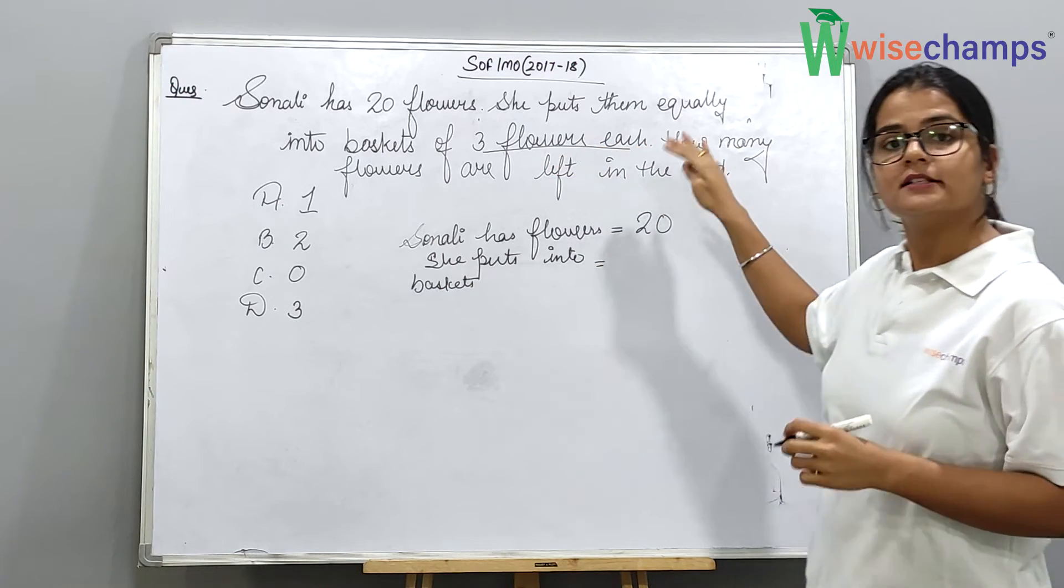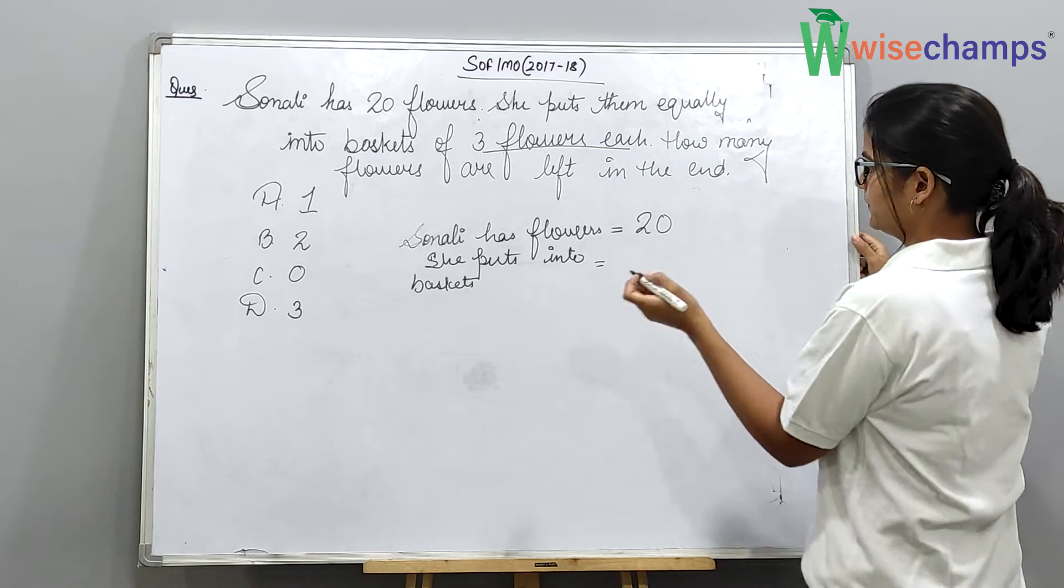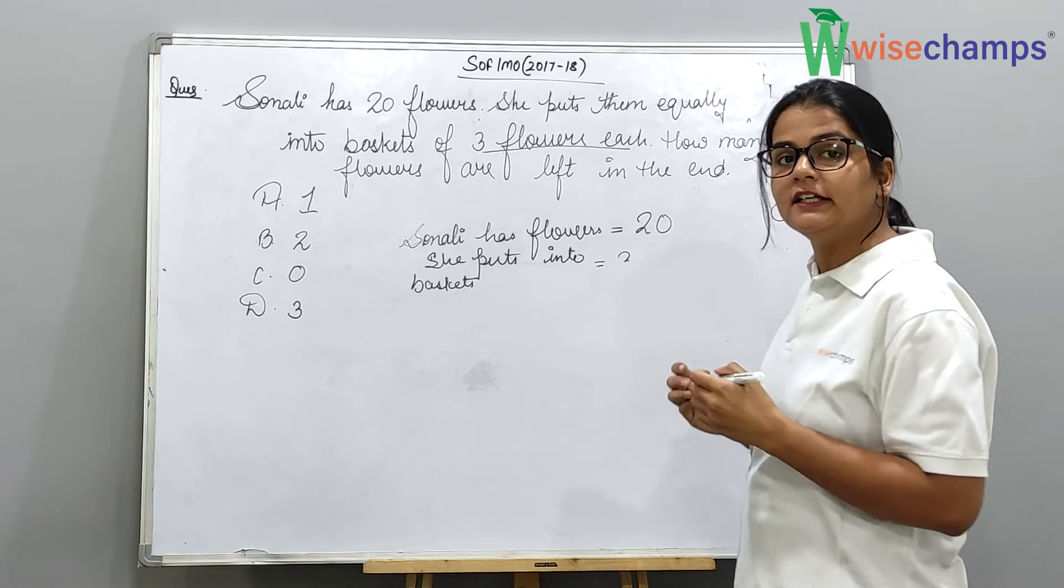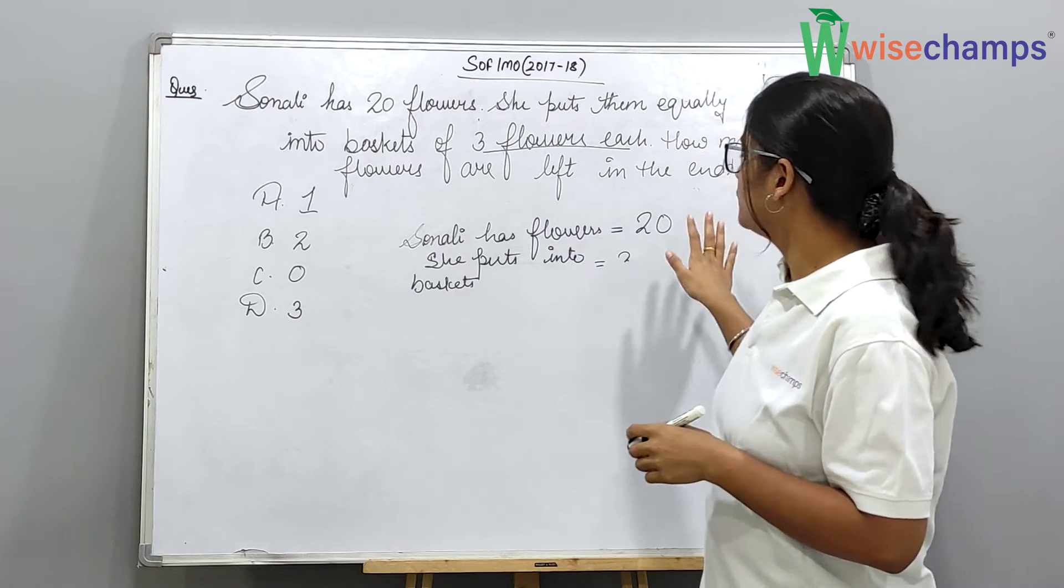Which is 3 flowers each. So what will we do here? We will add 3 till we get 20.